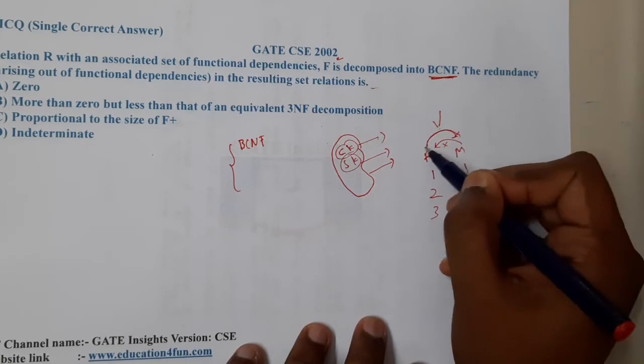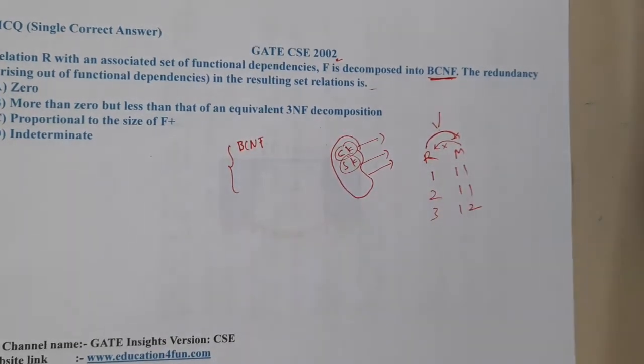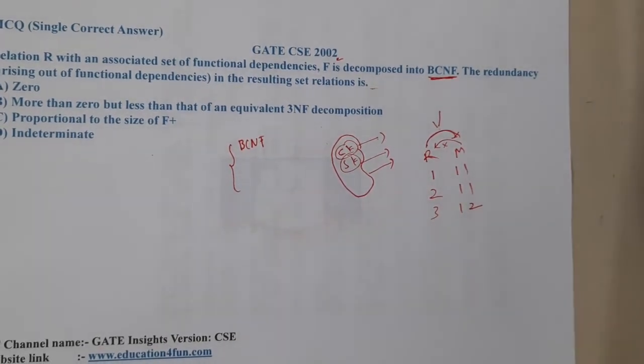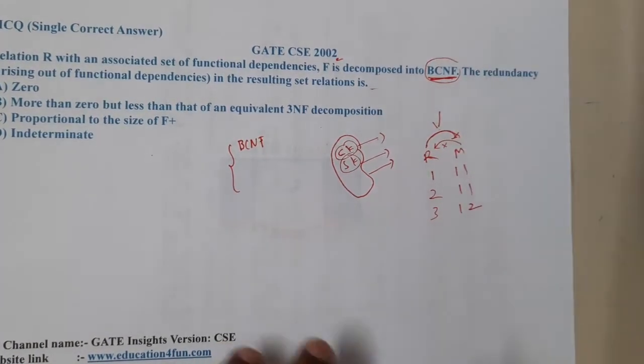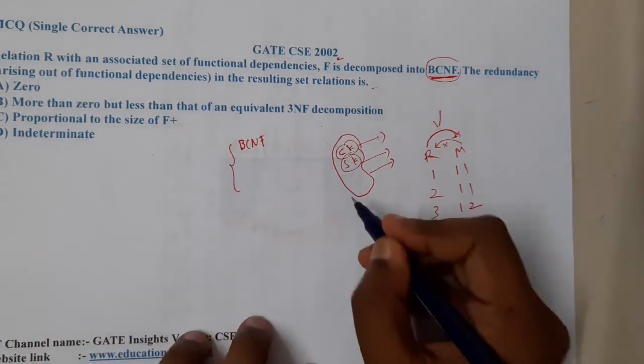When we talk about BCNF, any implication on the left hand side should be a super key. Whenever these type of things we consider, is there any chance of arising of redundancy and these type of issues? No. So whenever a particular function is in BCNF already, all the redundant things and unwanted things have already been removed.